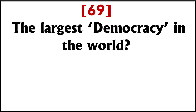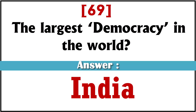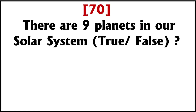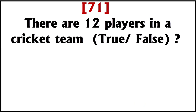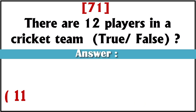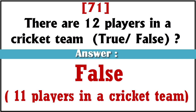What is the largest democracy in the world? India. There are nine planets in our solar system, true or false? False. Our solar system has only eight planets; Pluto is a dwarf planet. There are twelve players in a cricket team, true or false? False. There are eleven players in a cricket team.